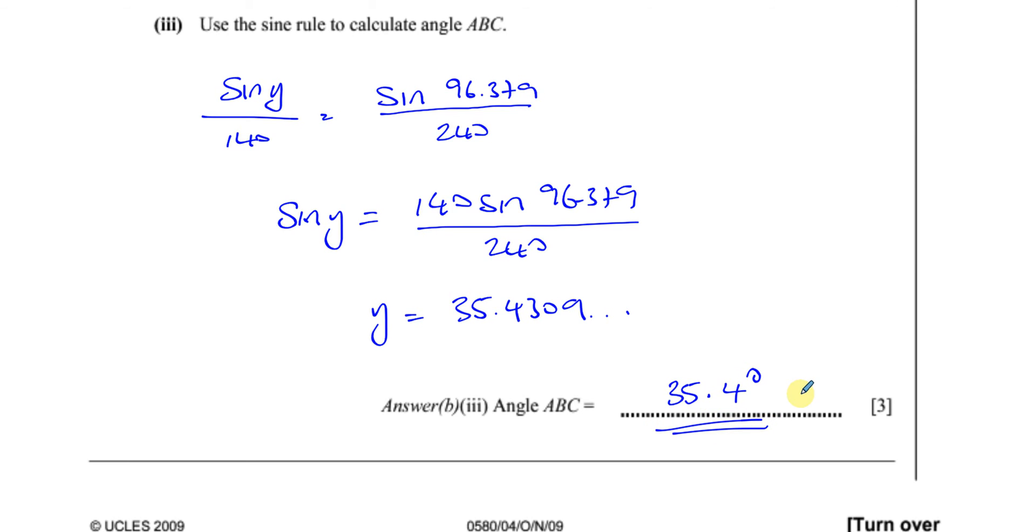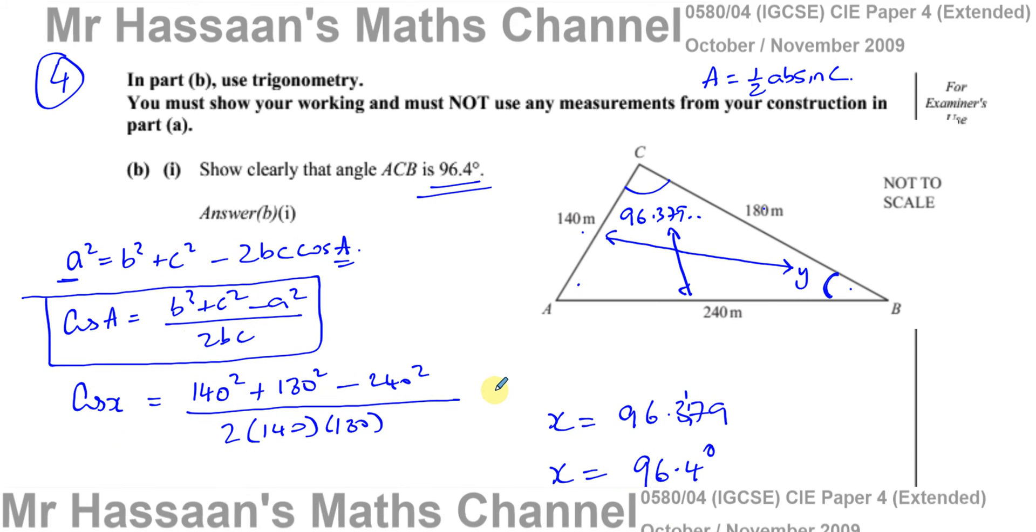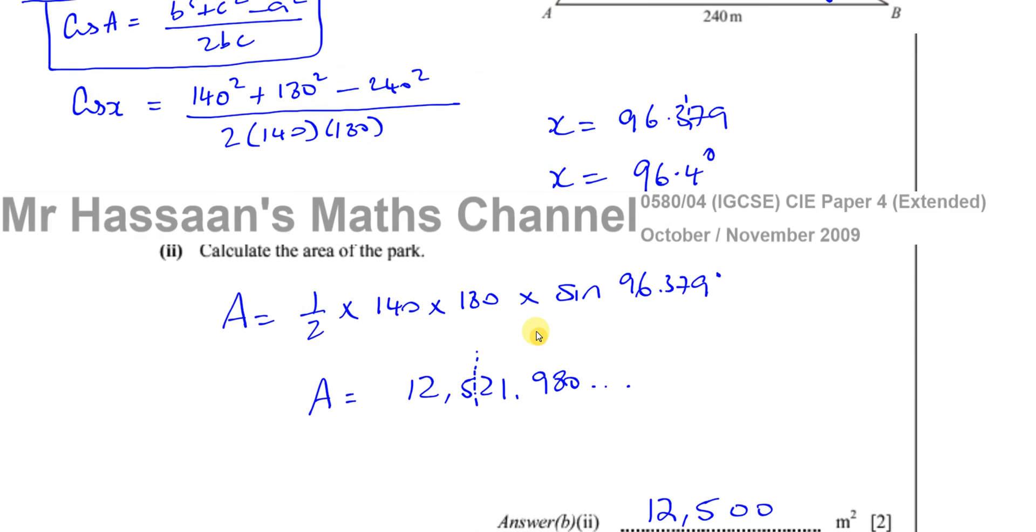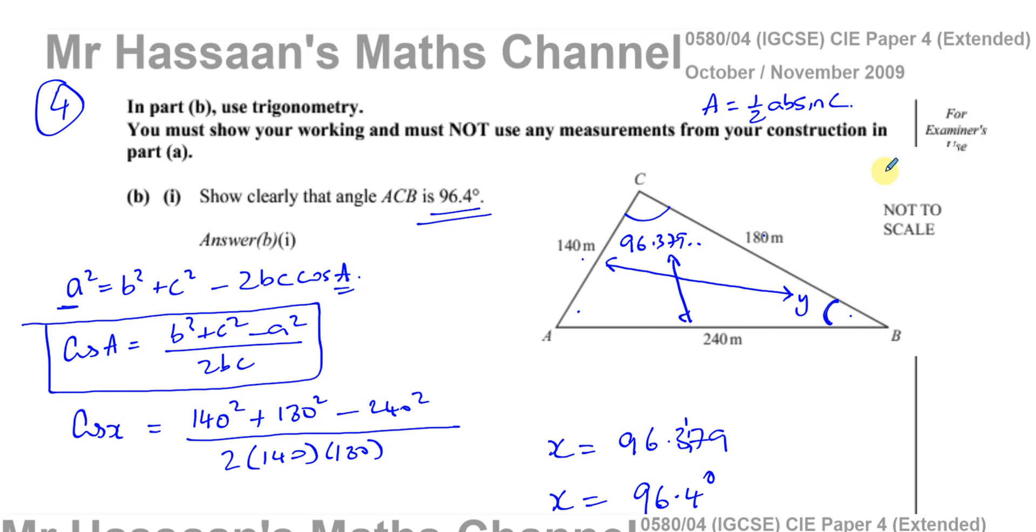So there we have it. Question four, part B. All about trigonometry. Cosine rule. Sine rule. Area of a triangle. The other part of four, which is four A. I'll put a link to that question on the video here somewhere. And other questions that have got to do with trigonometry in IGCSE. You'll find a playlist for that over here. Other questions from this paper. You'll also find a playlist for that on the screen from this paper. Other questions from the October 2009 paper four. And you can subscribe to my channel by clicking on this link. I'll put a link to another one of the newer syllabus IGCSE papers on the top of the screen. Thank you for watching and hope to see you soon.